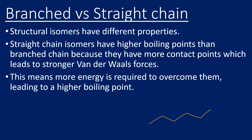Here's an example: straight chain hexane has carbons 1 through 6 in a straight chain. A branched form, 2,3-dimethylbutane, has the same molecular formula — C₆H₁₄. Because they have different carbon chain arrangements, these are chain isomers. The straight chain isomer is on the right and the branched isomer is on the left. They have the same molecular mass because they share the same molecular formula.